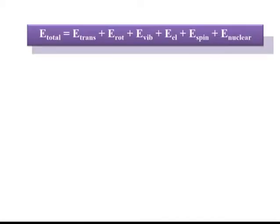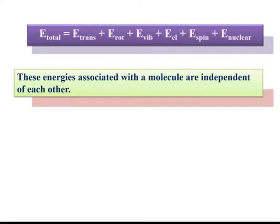The total energy of a molecule is equal to the sum of translational energy, rotational energy, vibrational energy, electronic energy, spin energy, and nuclear energy. These energies associated with a molecule are independent of each other — translational energy doesn't depend upon rotational energy, which doesn't depend upon vibrational energy. All these forms of energy are independent of each other.